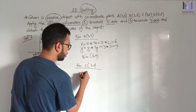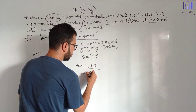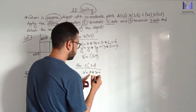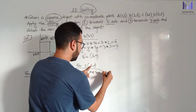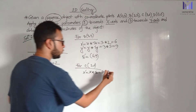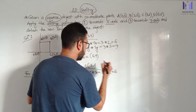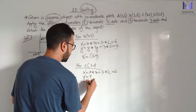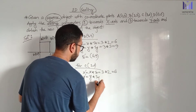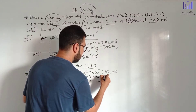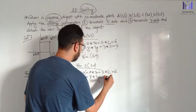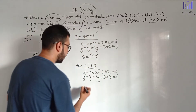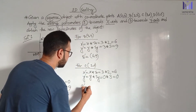For point C at (3, 0): x-prime equals x into sx, so 3 into 2 equals 6. Y-prime equals y into sy, so 0 into 3 equals 0. Therefore C-prime is (6, 0).